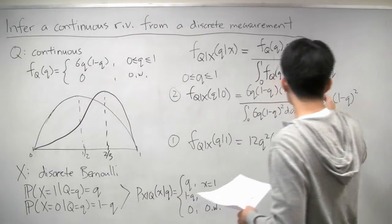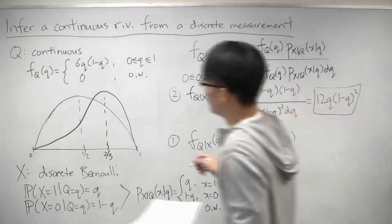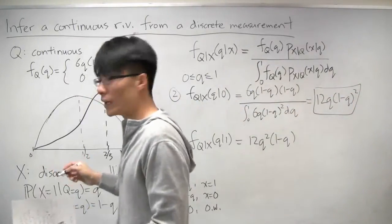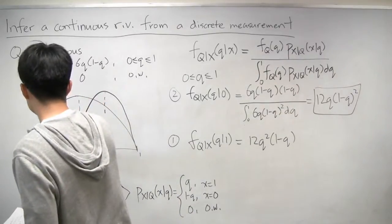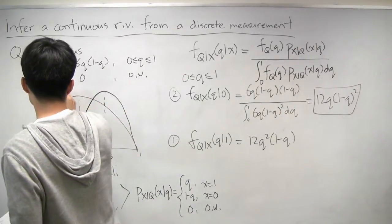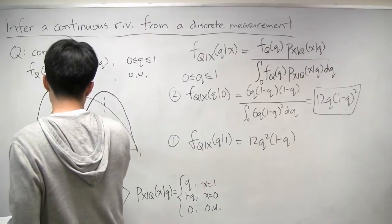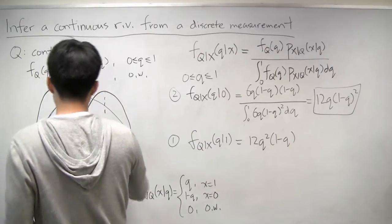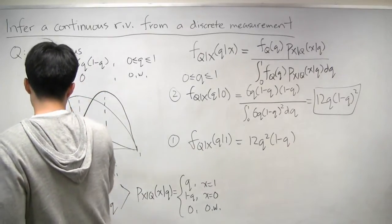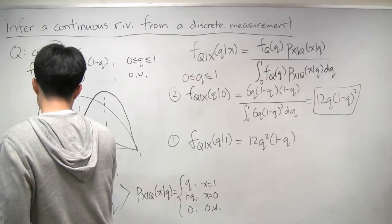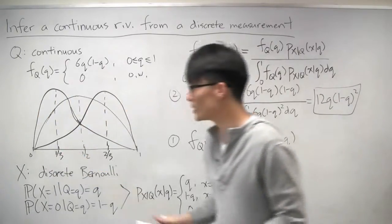And if you take this one, the case where you observe a 0 and you plot that, it turns out it looks something like this. And this is actually, it doesn't look like it, but it should be, the peak is at 1 third.